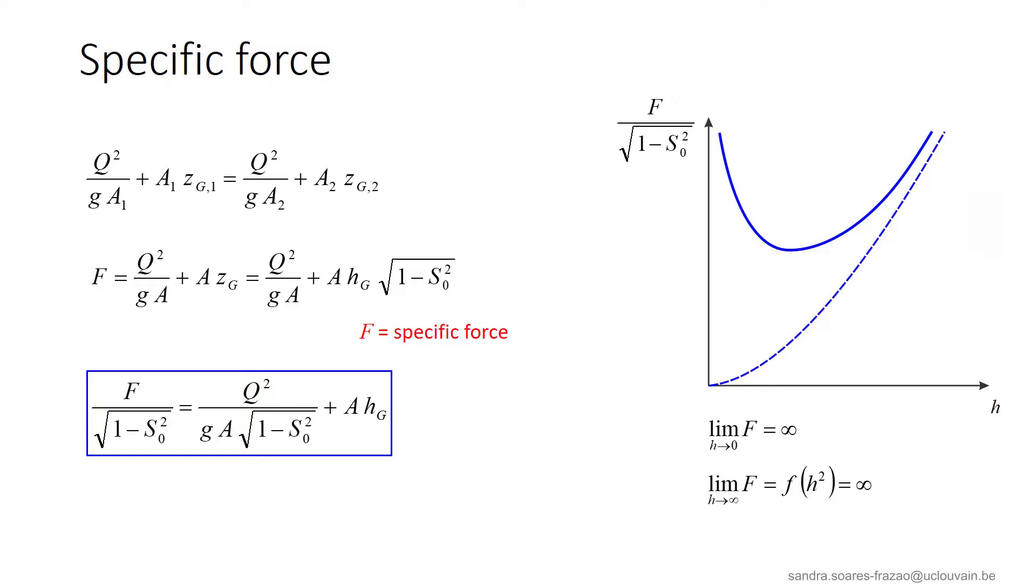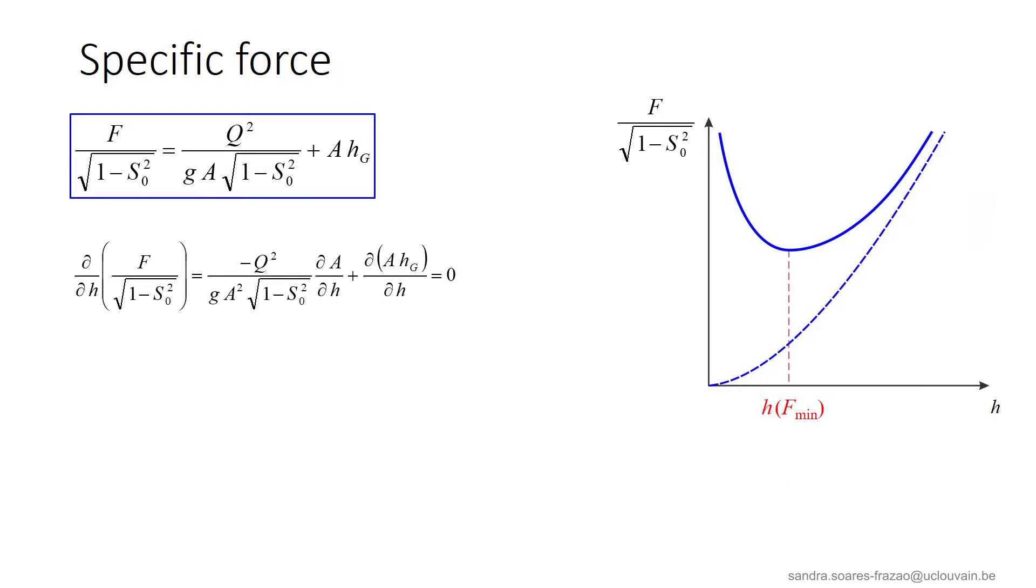Under this form, the specific force can be represented as a function of the water depth as illustrated here by the blue curve. We can see that this function tends to infinity when the depth approaches 0, but also when the depth approaches infinity. And in this case, the asymptote has a parabolic shape as the water depth appears both in terms A and in Hg, so F will tend to infinity like a function of H square. We also see that this curve presents a minimum that corresponds to a zero value of the derivative of the specific force function with respect to H.